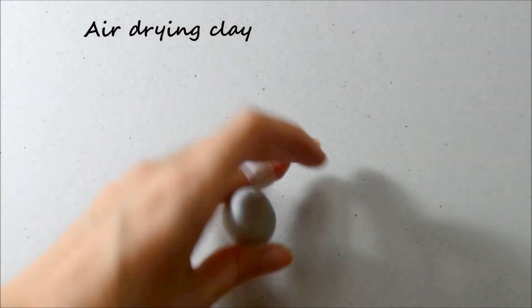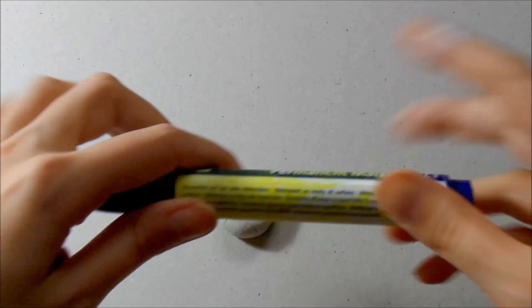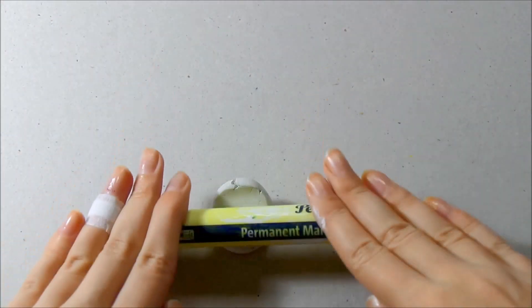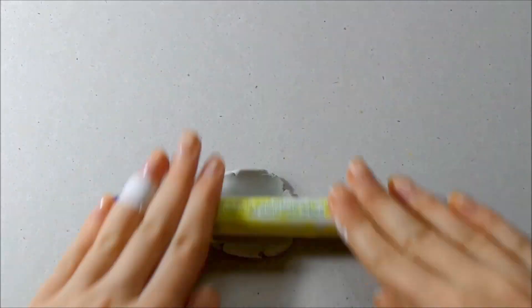First, rip a small piece of clay and form a ball about the size of a walnut. Use a marker or any large pen and roll it on top applying pressure.